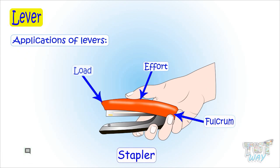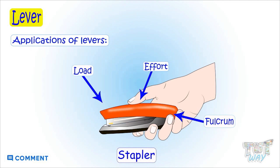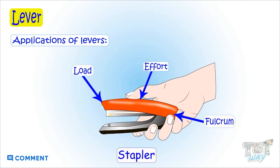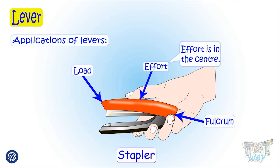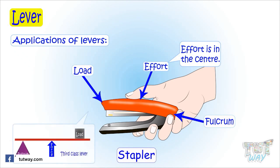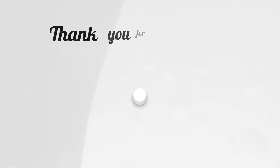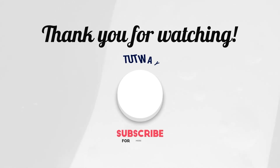The other end of the stapler is the load area, as it supports the load. So it has fulcrum, effort, and load, and here effort is in the center. So the stapler is also an example of a third-class lever. Thank you so much for watching!